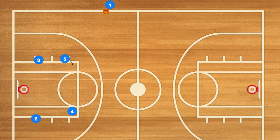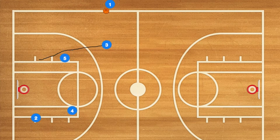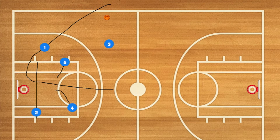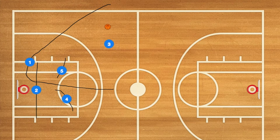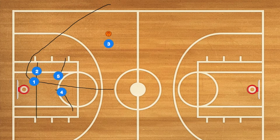First, player five will screen down for player three. Once player three uses that screen, he's going to run up to the three-point line and receive a pass from player one. At this time, player one is going to cut towards the rim and use player two as a screen, running between players four and five.